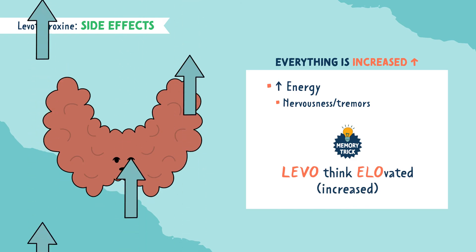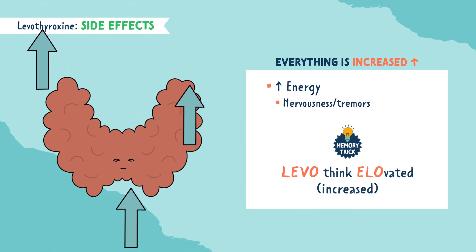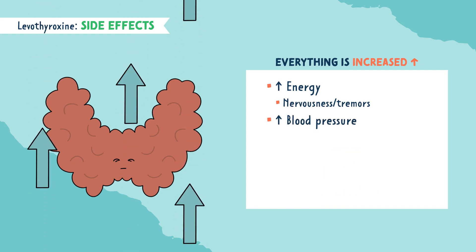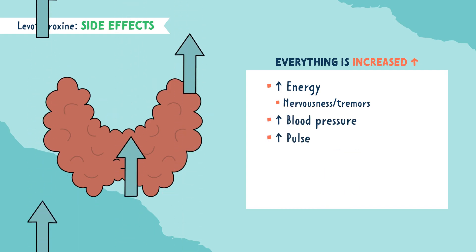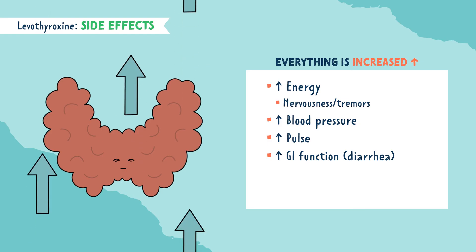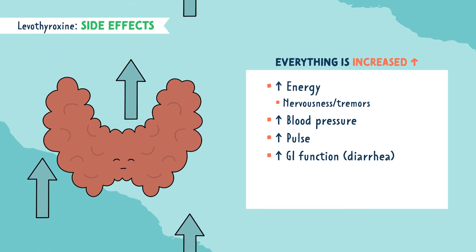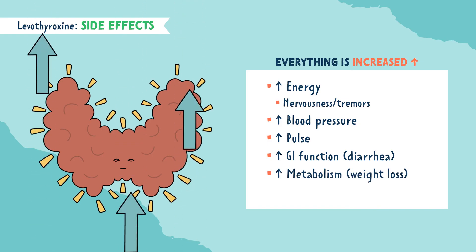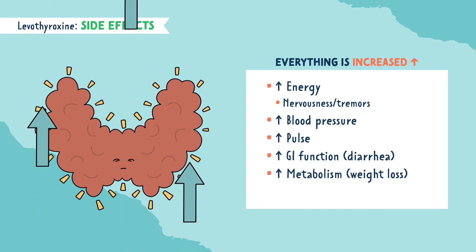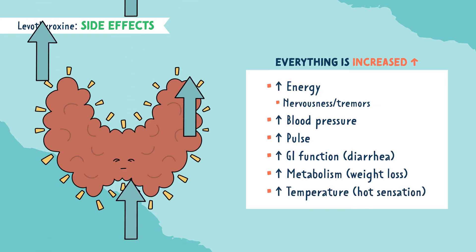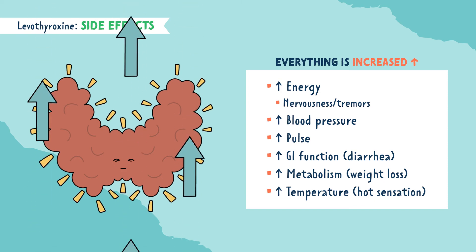So we'll have increased energy, such as nervousness and tremors; increased blood pressure; increased pulse; increased GI function, aka diarrhea; and an increase in metabolism, which leads to weight loss. As well as an increased temperature — these patients typically have a hot sensation.